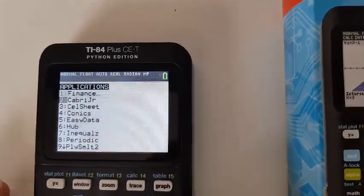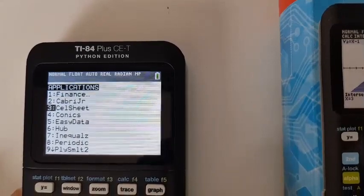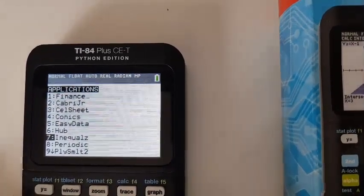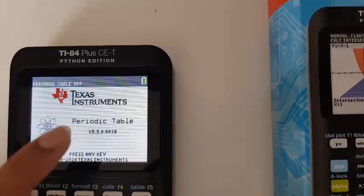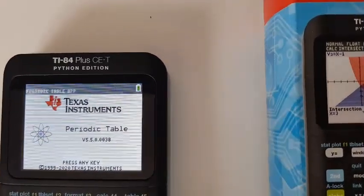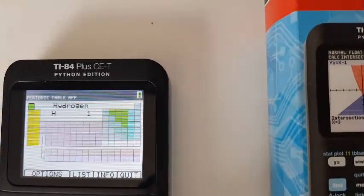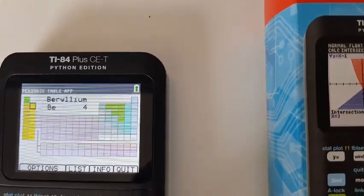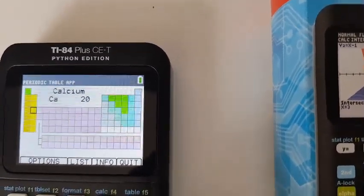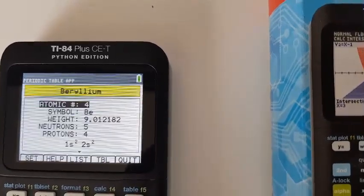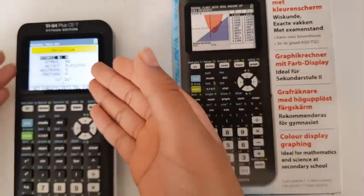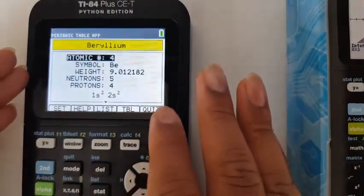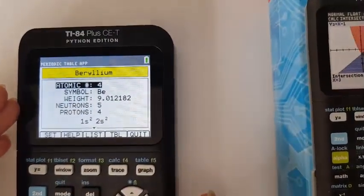There are a lot of apps in this: finance, Cabri Junior, cell sheet, easy data. My personal favorite is the periodic table. So here you have it, the Texas Instruments periodic table. Now here you have the periodic table with all the elements. Let's just click any element at random. Beryllium. And here you have, if you press enter, you get all the detailed explanations about each element. So its atomic number is four, symbol, everything like that.